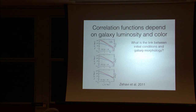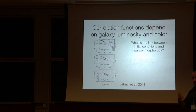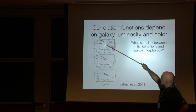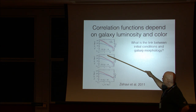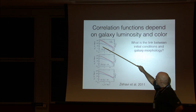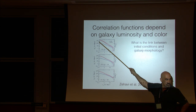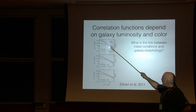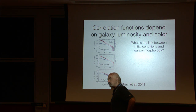Just to remind people: we're not talking about 1% effects here. We're talking about how bias depends on galaxy properties and parameters. This is from a study of Sloan clustering — one figure from Zehavi et al. — where you're looking at clustering properties of red galaxies and blue galaxies. Note that this is the halo model, which is good but not perfect. Not only are the amplitudes different, but the slope as a function of scale is different.